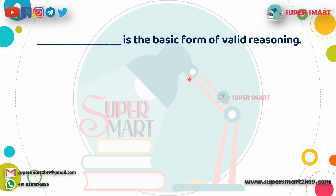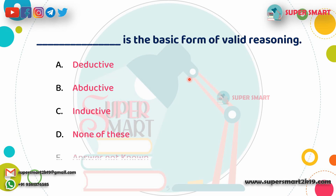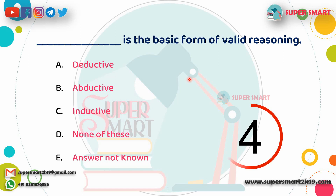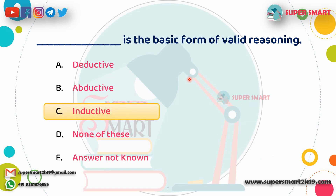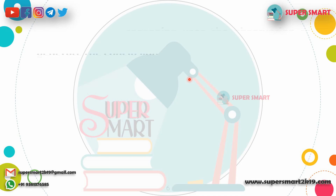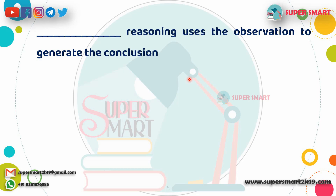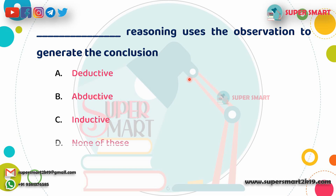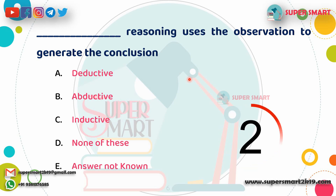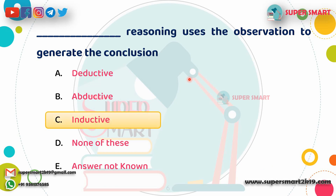Next question: Dash is the basic form of valid reasoning. Answer: Inductive reasoning. Also, dash reasoning uses observation to generate a conclusion. Answer: Inductive reasoning.